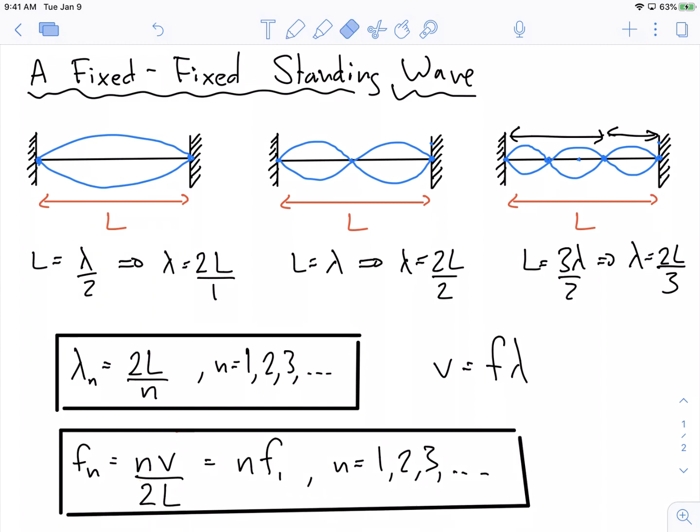So what these equations describe are the wavelengths of oscillations that are allowed, standing wave oscillations that are allowed on this string, and the frequencies that are associated with those oscillations. And we notice that all of the possible frequencies are just multiples of the fundamental.